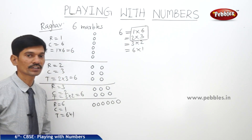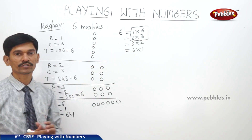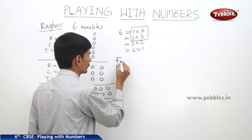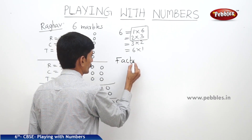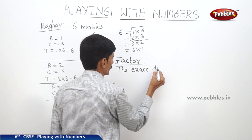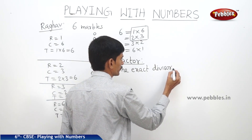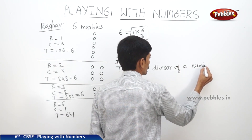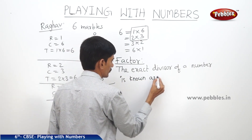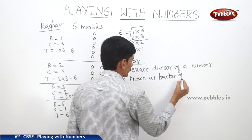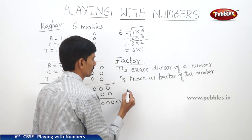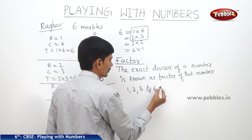The exact divisor of any number is known as the factor of that number. So one, two, three, and six are the factors of six.